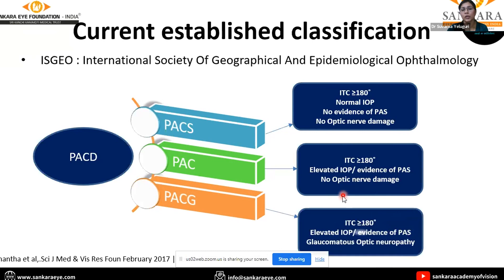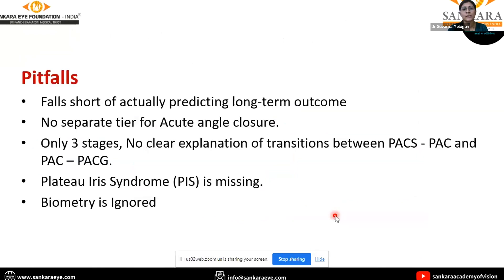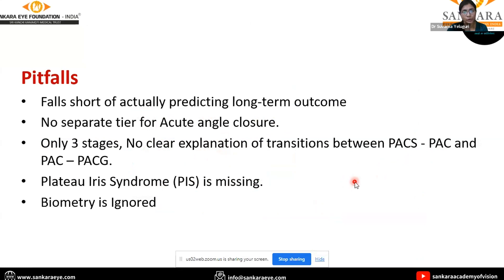In PACG, along with PAC criteria, glaucomatous optic neuropathy changes are also present. Some drawbacks of this classification are that it falls short of predicting long-term outcomes, there is no separate type for acute angle closure, and only three stages are explained. There is no clear explanation of transitions between groups from PACS to PAC and PAC to PACG. Additionally, plateau iris syndrome is missing and biometry such as axial length and lens thickness are ignored.